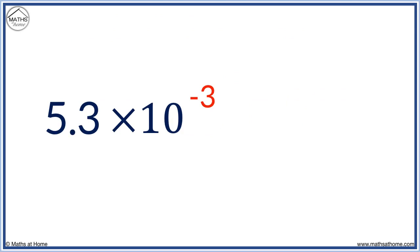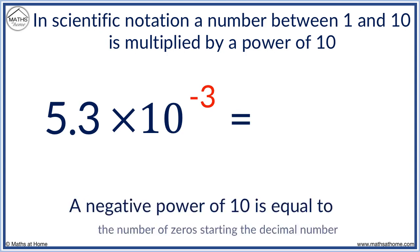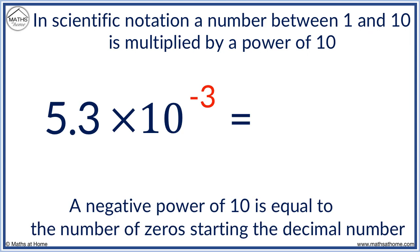Here is a number in scientific notation, but the power of 10 is negative. Negative powers of 10 actually represent division by 10, so our number will be very small because it has been divided by 10 three times. An easy way to do this is to know that a negative power of 10 is equal to the number of zeros starting the decimal number. We have negative 3, therefore we have three zeros. That is, a zero, the point, and two more zeros. We then write the digits in the number. That is, the 5, then the 3.